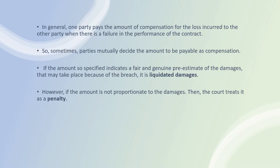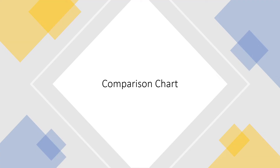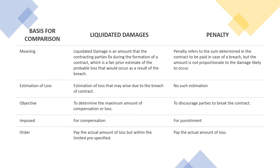In general, one party pays the amount of compensation for the loss incurred to the other party when there is a failure in the performance of the contract. Sometimes parties mutually decide the amount to be payable as compensation. If the amount specified indicates a fair and genuine pre-estimate of the damages that may take place because of the breach, it is called liquidated damages. However, if the amount is not proportionate to the damages, the court treats it as a penalty.